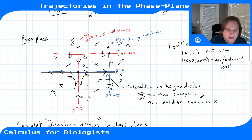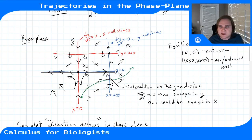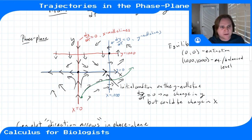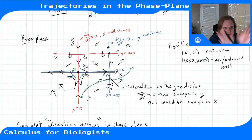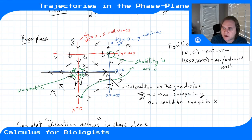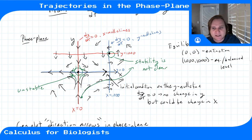From here we'll use more computer-assisted tools. I'll show a tool called p-plane, which plots the phase plane and uses an advanced version of Euler's method to find trajectories starting from any initial condition. The idea is: once we have the arrows, we can follow them from any chosen point. From this sketch alone we can see (0,0) is unstable, but the stability of (1000,1000) isn't clear without better tools.